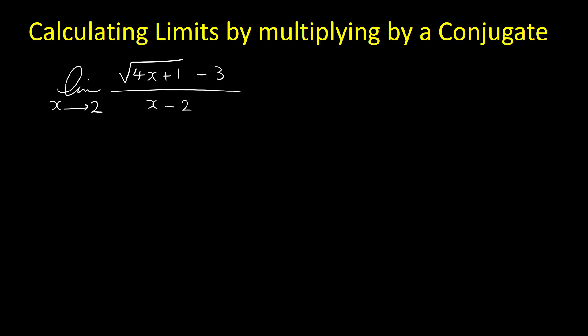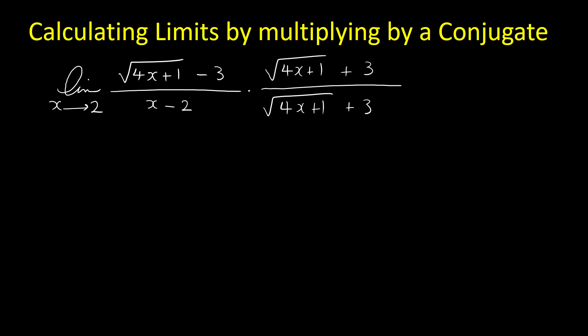For finding this limit we have to multiply the top and the bottom by the conjugate of the expression in the top. The conjugate of radical 4x plus 1 minus 3 is radical 4x plus 1 plus 3, over radical 4x plus 1 plus 3. We multiply both top and bottom because we want not to change the question — by multiplying top and bottom by the same expression we are actually multiplying the limit by 1.